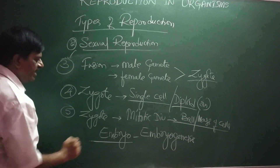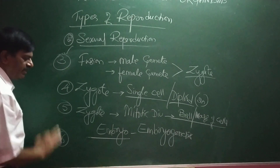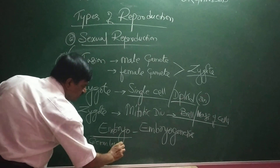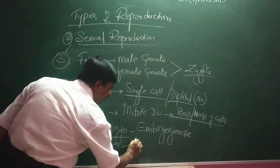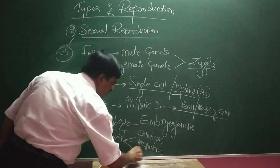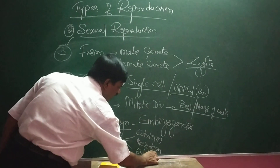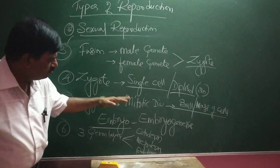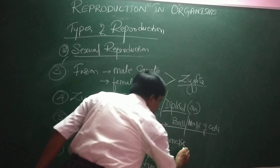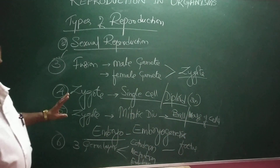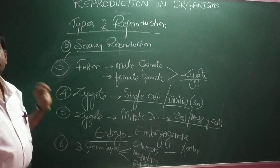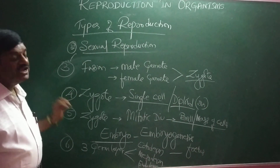The embryo undergoes repeated divisions to give rise to three germ layers. The outer one is called ectoderm, the middle one is called mesoderm, and the inner one is called endoderm. These three layers of cells give rise to a fetus. Very importantly, the offspring never resemble the parents — they are genetically different.